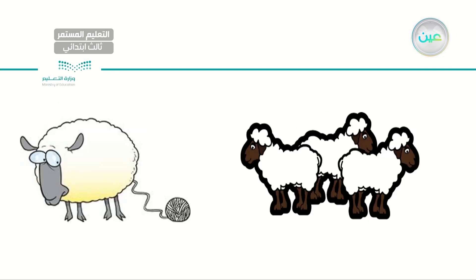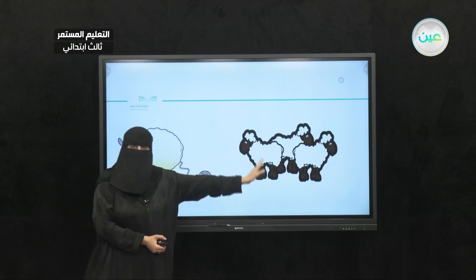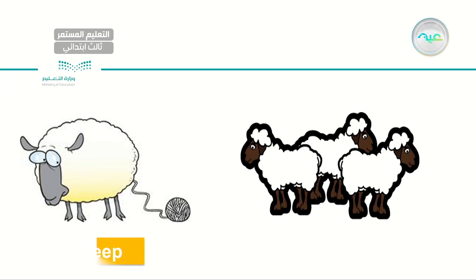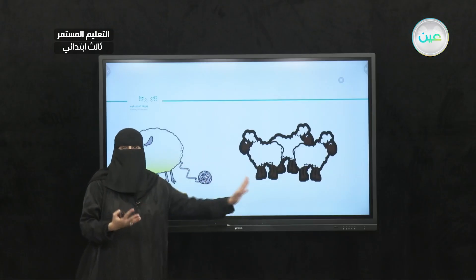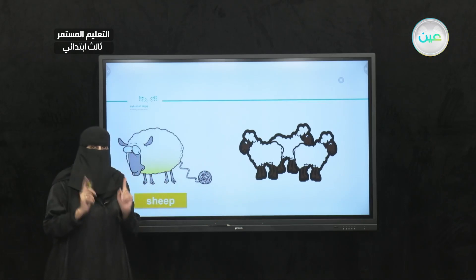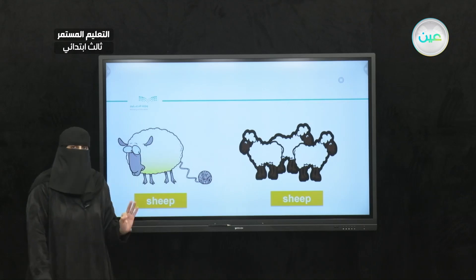How about here? I have the same animal, but I have just one on your left and three on your right. I have a sheep. Now, I need you to remember the plural of sheep — it was an irregular noun because it is exactly the same: sheep, but with no article. I have one, two, three — I have three sheep.